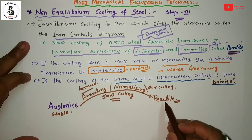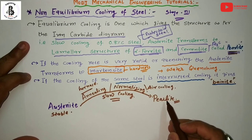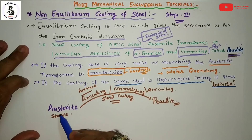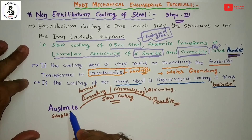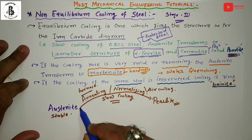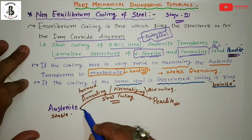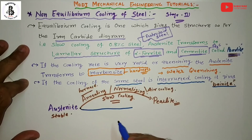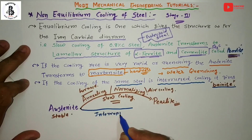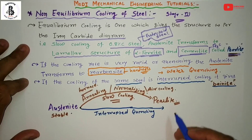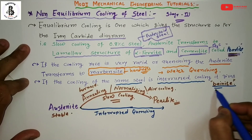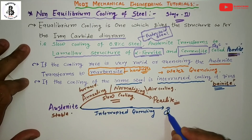The second case: heat the material to the stable austenite phase, then perform interrupted quenching — this produces a bainitic structure.